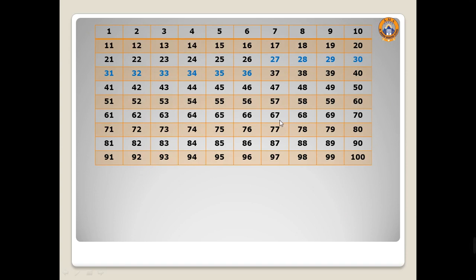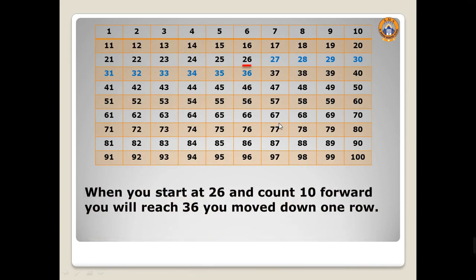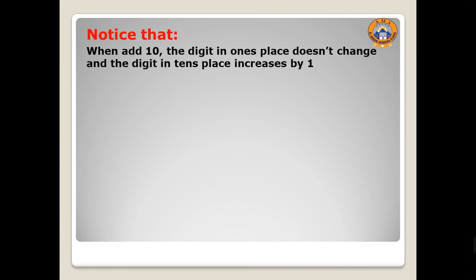On 100 chart, when you start with number 26 and count 10 forward, let's count with me: 1, 2, 3, 4, 5, 6, 7, 8, 9, 10. You will reach 36. Look, you move down one row. So when you add 10, the digit in one place doesn't change and the digit in 10 place increases by 1. Look, number 6 in one place doesn't change, and number 2 in 10 place increases by 1.